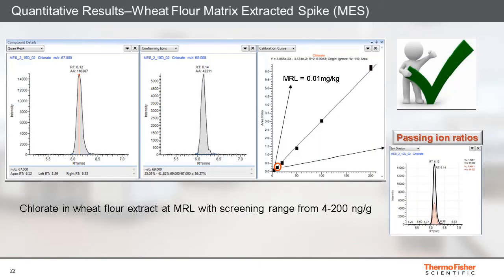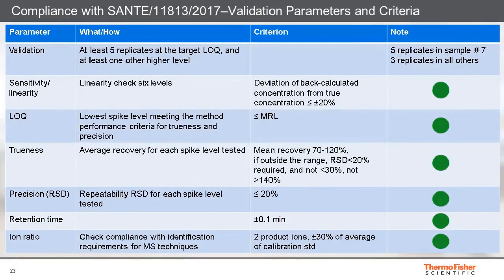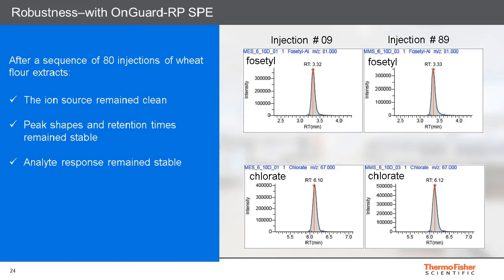This slide shows the quantification and identification of chlorate at the EU maximum residue level. The results for chlorate and all other compounds except those with high values in the blanks are fully compliant with the latest SANTE guideline criteria for method validation. For robustness, after 80 consecutive injections of wheat flour extracts, the ion source remained clean and peak shapes, retention times, and detector responses remained very stable.